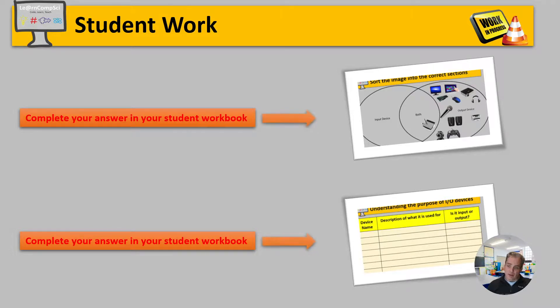And then on the second slide, what you've got to do is you've got to list several different devices, and you've got to give a description of what that device actually does. Okay, and then from that description, you can determine if it is an input or an output device. Okay, and that will be the end of our first lesson once you've completed those two slides.